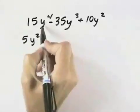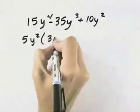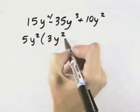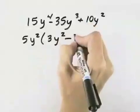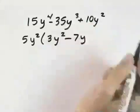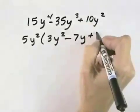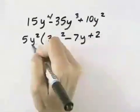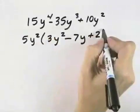If we divide the 5 and the y² out of the first term, we're left with 3y². Then, 5 into 35 is 7 times, and taking the y² out of the y³ leaves y. And finally, 5 goes into 10 two times, and we've already divided out the y², so it's plus 2.